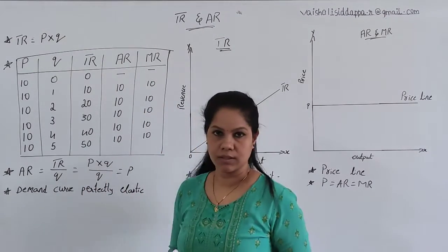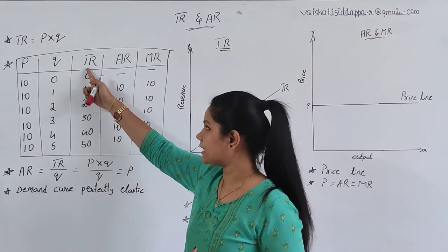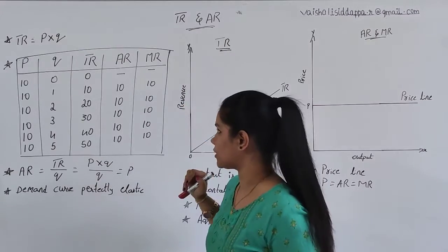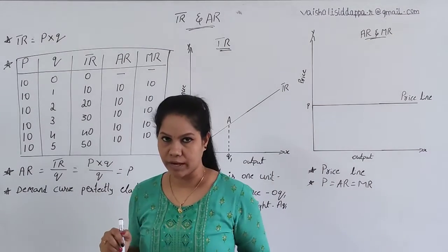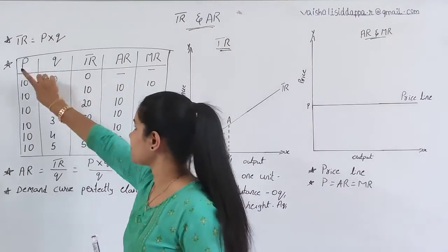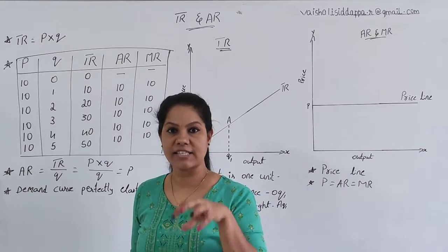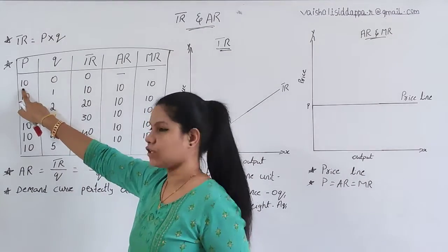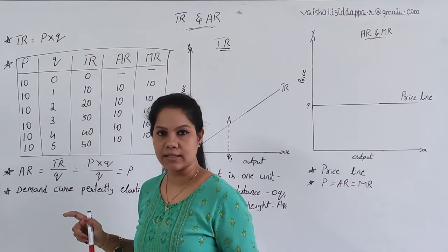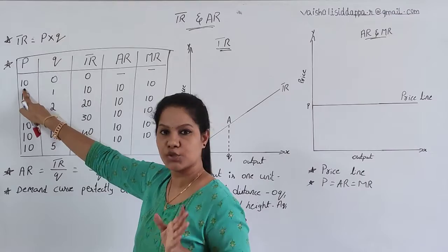Now you have a table with three concepts: TR which is total revenue, average revenue, and marginal revenue. Before talking about these, remember: the price of each single unit of good is 10 rupees. Whatever goods we are selling, the price will be 10 rupees — we are going to assume that.